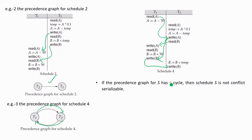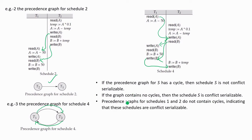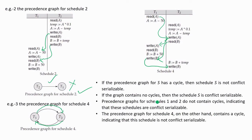If the precedence graph for s has a cycle, then schedule s is not conflict serializable. If the graph contains no cycles, then the schedule is conflict serializable. The precedence graphs for schedule one and schedule two do not contain a cycle, so they are conflict serializable. The precedence graph for schedule four, on the other hand, contains a cycle — t1 to t2 and t2 to t1 — indicating that schedule four is not conflict serializable.